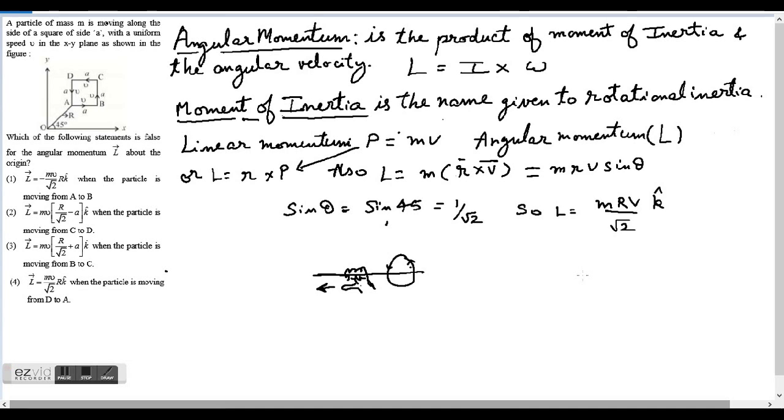The question is: a particle of mass m is moving along the side of a square of side a with a uniform speed v in the xy plane as shown in the figure. Which of the following statements is false for the angular momentum L about the origin?